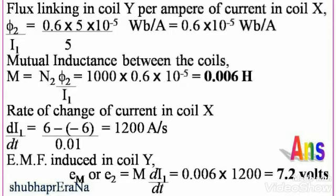Now calculate the EMF. Rate of change of current in coil X, dI₁/dt = (6 − (−6)) / 0.01 = 1200 Amperes per second. Therefore EMF induced in coil Y, E₂ = M × dI₁/dt = 0.006 × 1200 = 7.2 Volts. This completes this problem.